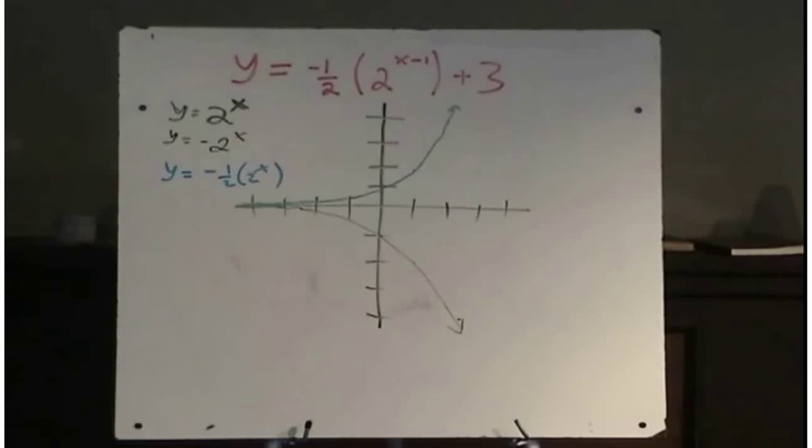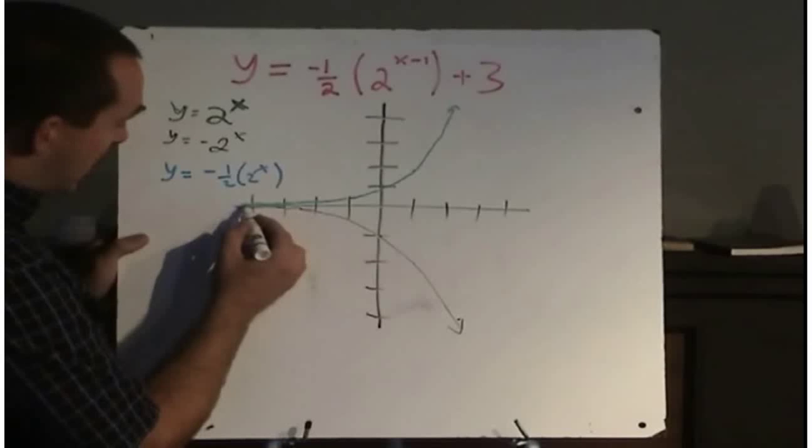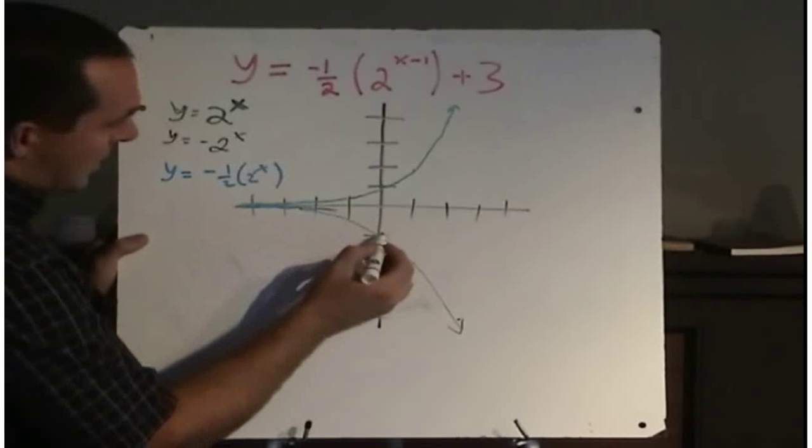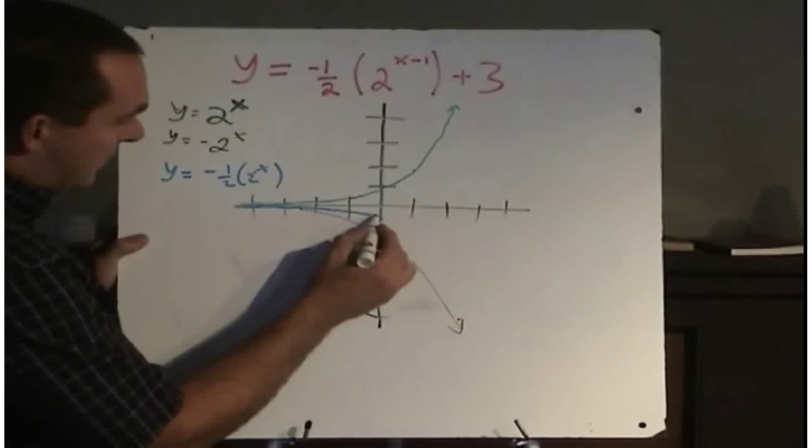So I need to vertically compress this by a half. So all of my y values will now be half of what they used to be. Well, half of nothing is still basically nothing here. Here's negative 1. Half of that would be negative one-half.